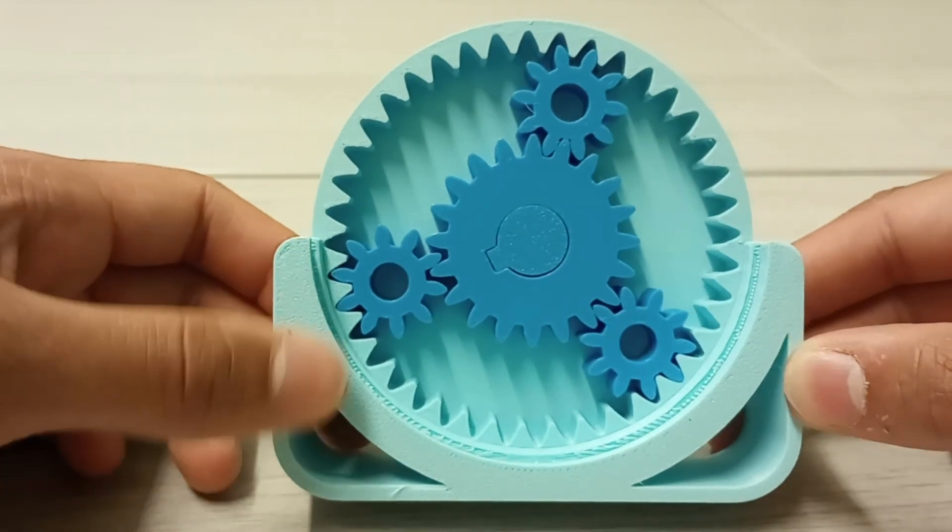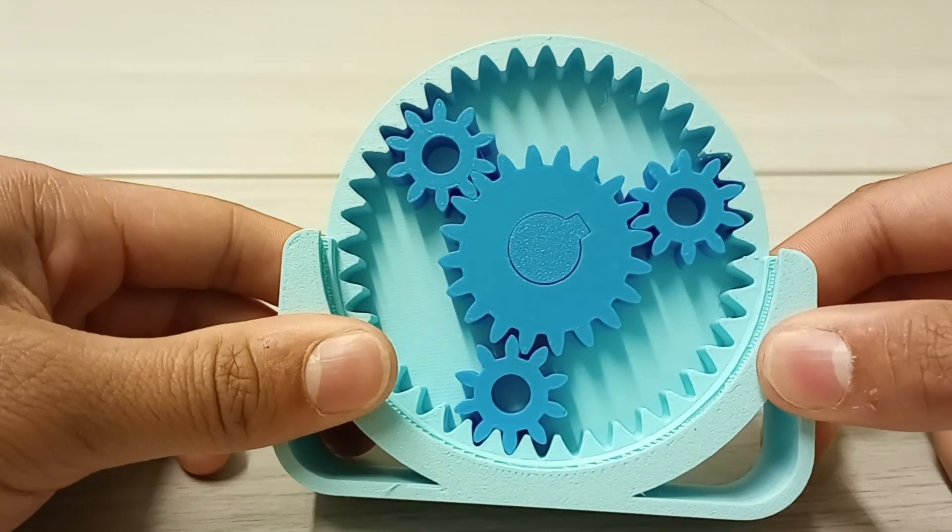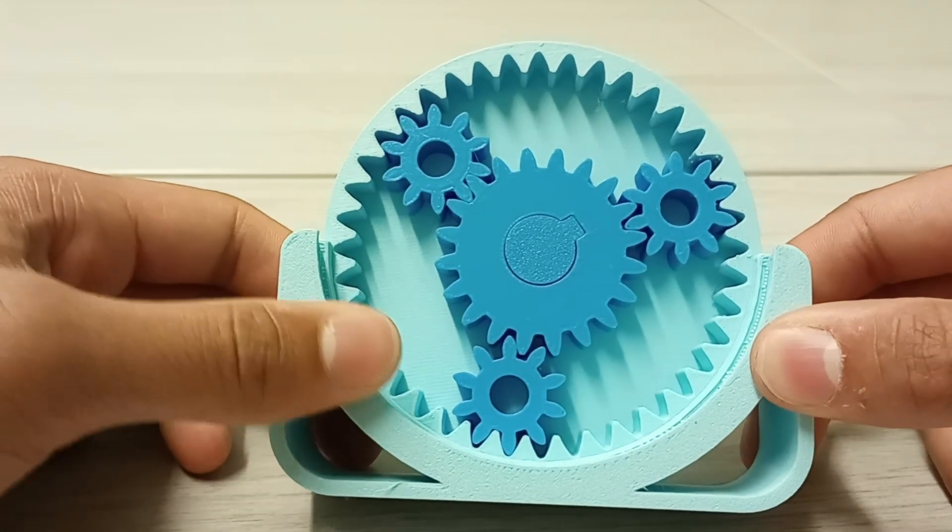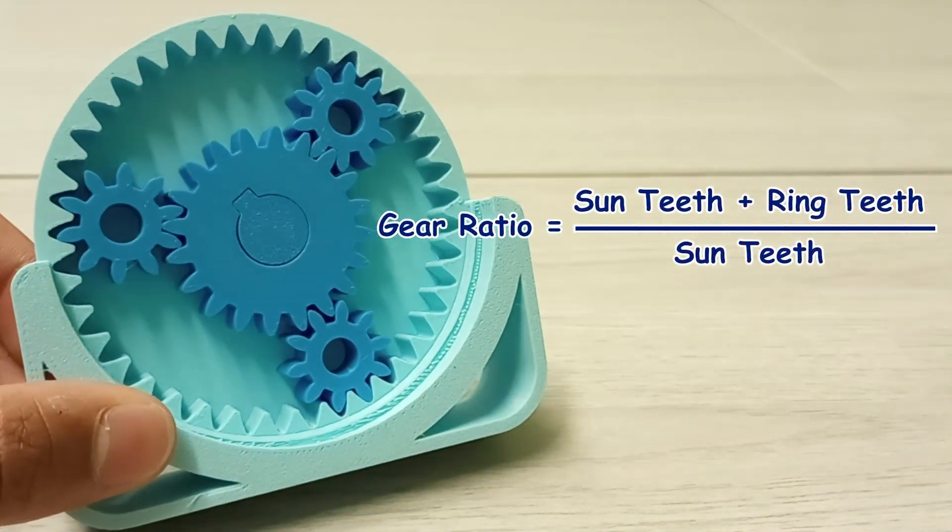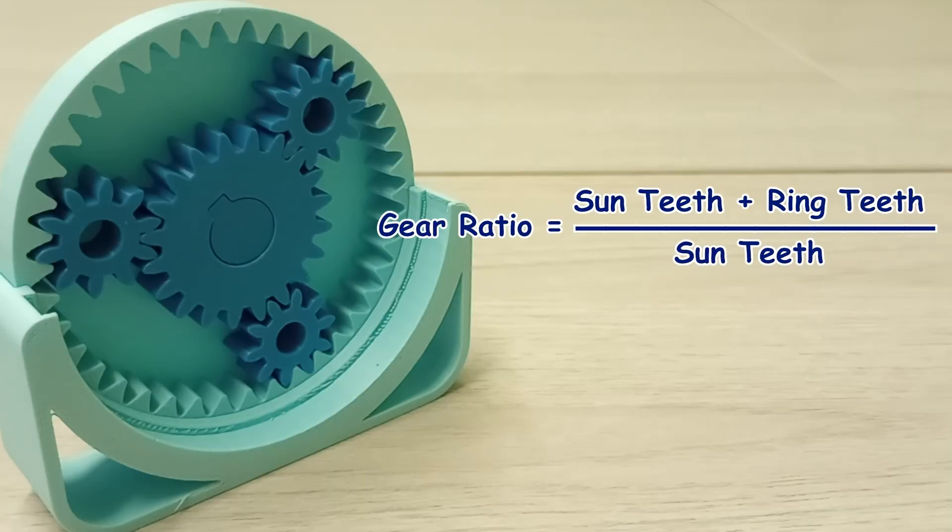But how can we find the gear ratio in the whole system? We'll start off by finding the ratio between sun gear A and the first set of planetary gears using this formula right here. It states that the gear ratio between the two is the number of teeth on the sun gear plus the number of teeth on the ring gear divided by the number of teeth on the sun gear.